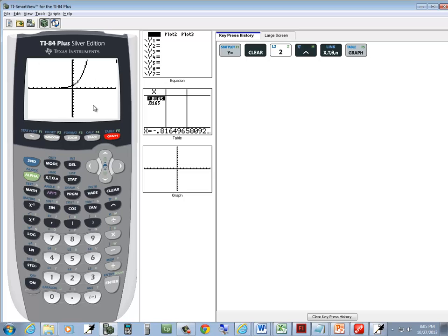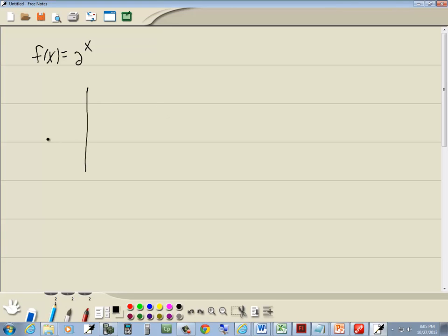Looks like that, looks like it's passing through 1 on the y-axis. So that'd be our graph right there.